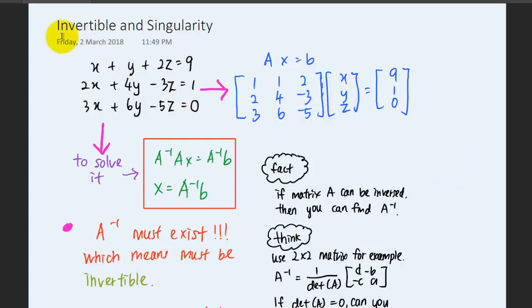In this lesson, we are going to talk about the invertible and singularity of a matrix for a system of linear equations. So how do we know whether a system of linear equations has a solution or not? Let's look at the invertibility and the singularity of the matrix.